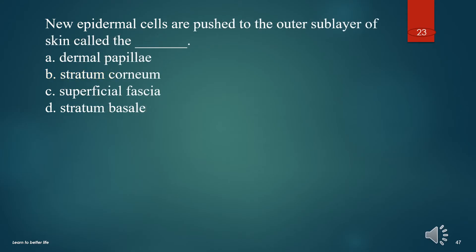New epidermal cells are pushed to the outer sublayer of skin called the what? A. Dermal papillae. B. Stratum corneum. C. Superficial fascia. D. Stratum basale. The answer is B. Stratum corneum.